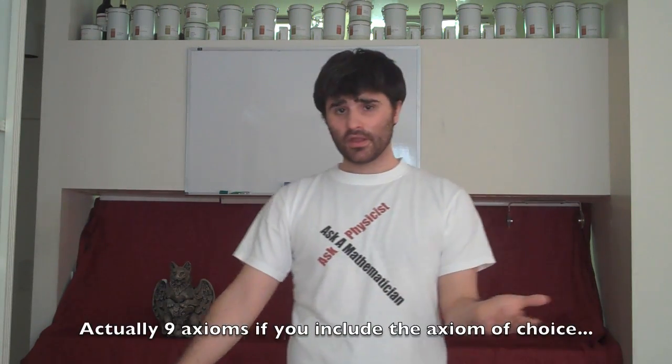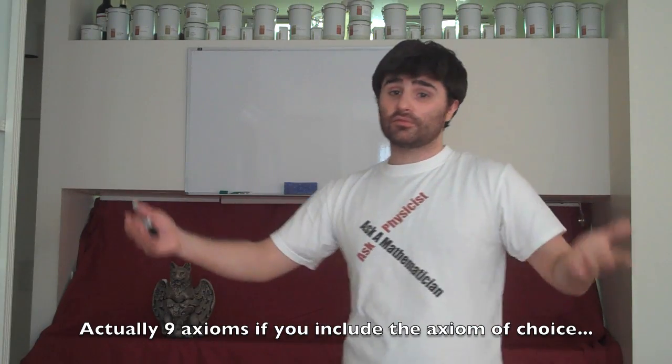The most popular way to do this today is what's known as ZFC, Zermelo-Frankel set theory with the axiom of choice, the C stands for choice. And there are eight basic axioms, so what are these axioms, what do they look like?